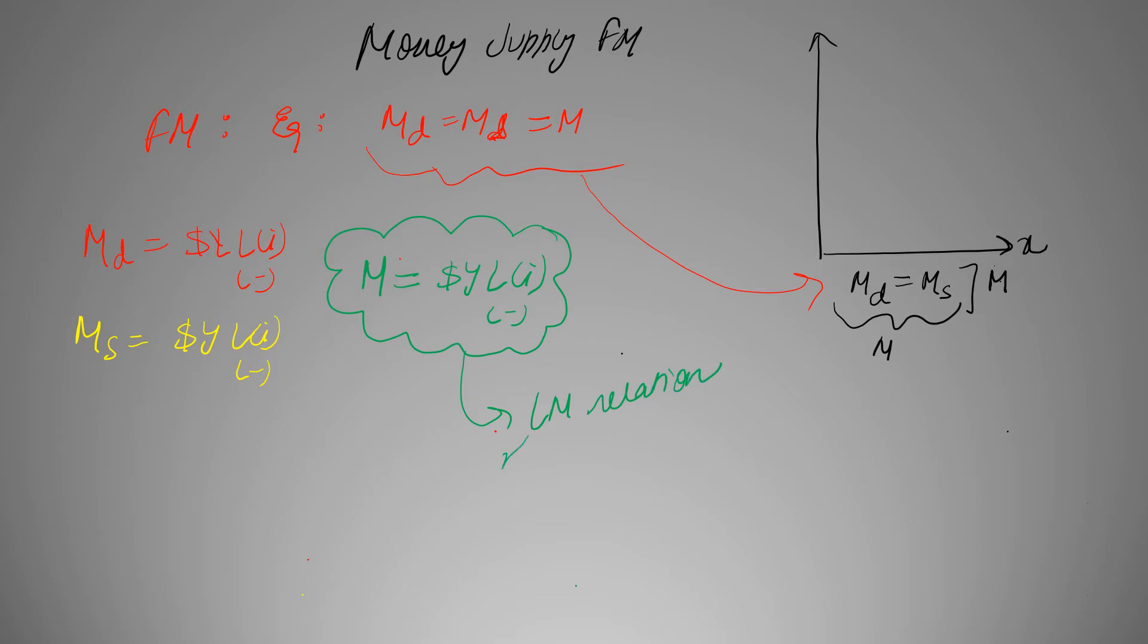And this relation that we just derived is called lm relation, where l basically means liquidity and m means money. Now, actually we took these to be equal because it is going to help us find the interest rate prevailing in an economy. We will talk about it now.